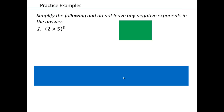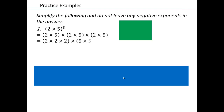Let's try this: what is 2 times 5 to the power 3? We saw that that's the same as 2 times 5, times 2 times 5, times 2 times 5 — three times. But we also have the commutative property and associative property of multiplication, so we can rearrange and multiply all the 2s first and all the 5s together, giving us 2 to the power 3 times 5 to the power 3.